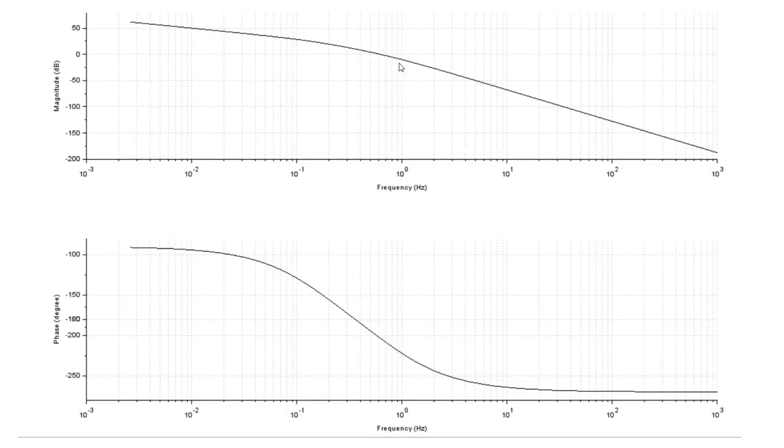So we're going to start by finding the gain margin. When we're thinking about the gain margin, we're thinking about how much could you change the gain when you are at minus 180 degrees of phase that would make your gain go to zero. So we're going to start by looking at minus 180 degrees and we need to find what the frequency is when you have a phase of minus 180 degrees.